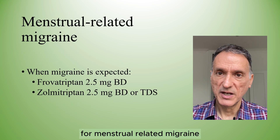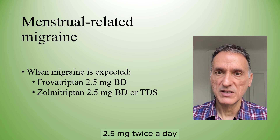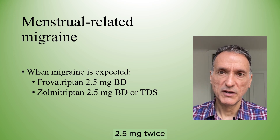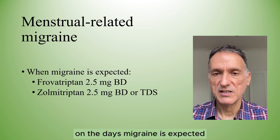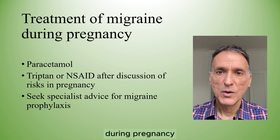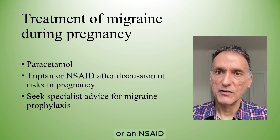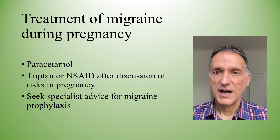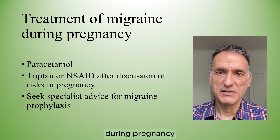For menstrual-related migraine, we will consider frovatriptan 2.5 mg twice a day or zolmitriptan 2.5 mg twice or three times a day on the days migraine is expected. For the treatment of migraine during pregnancy, we will offer paracetamol, but we may consider a triptan or an NSAID after discussing the risks during pregnancy, and we will seek specialist advice for migraine prophylaxis during pregnancy.